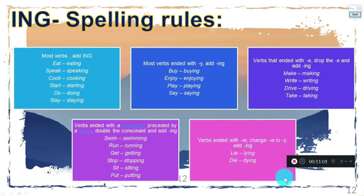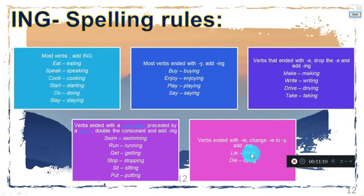There is another small group of verbs that end in -IE. For these, we remove the -IE, add -Y, and then add -ing: lie→lying, die→dying.